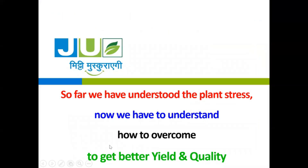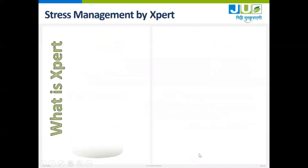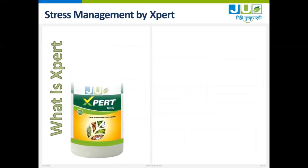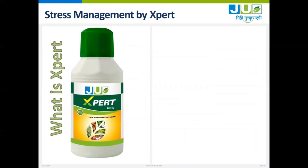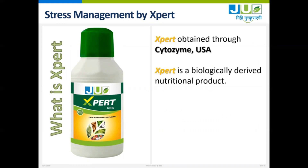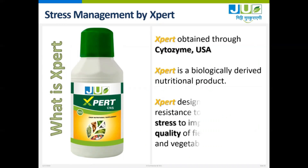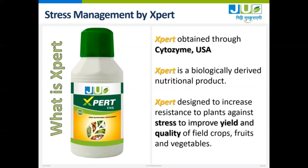So far we have understood plant stress. Now we need to understand how to overcome plant stress to get better yield and quality. Stress management is being done by EXPERT. EXPERT comes from Cytozyme USA. EXPERT is a biologically derived nutritional product designed to increase plant resistance against stress and to improve yield and quality of field crops, fruits, and vegetables.